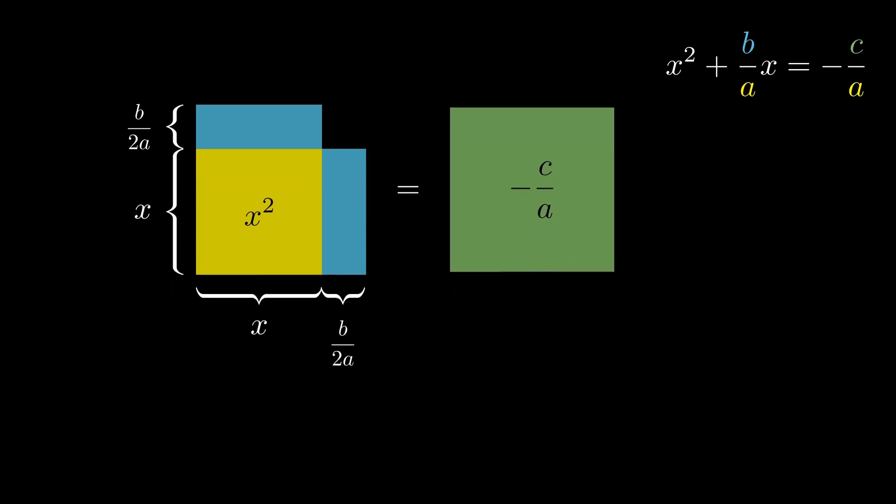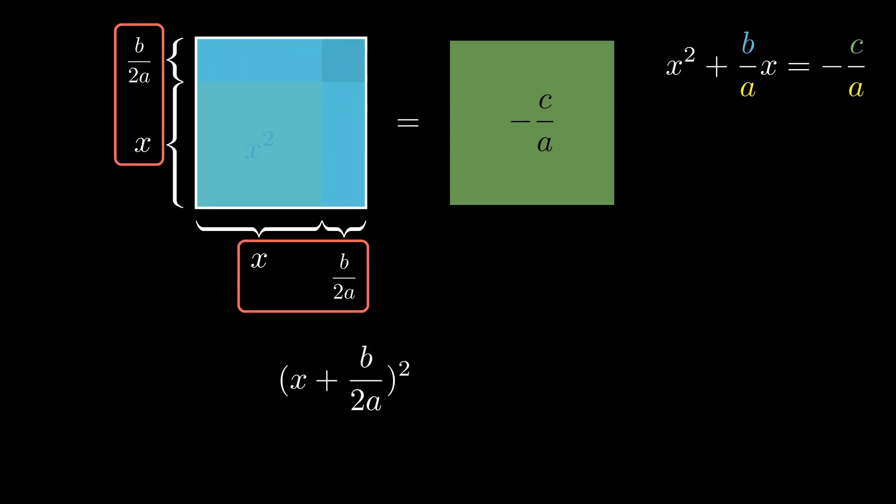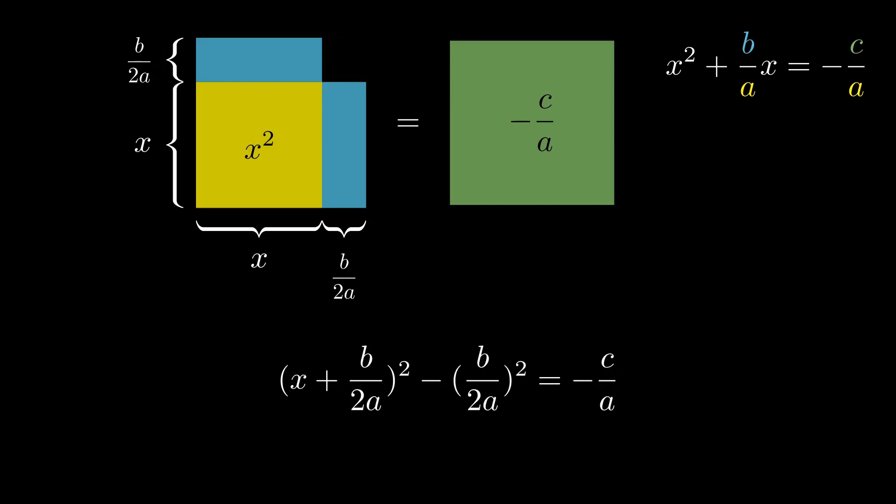The area of the shape on the left side is equal to the area of the square on the right side. Everything is just rearranged. We can now calculate the area of the shape on the left side by first completing a square by multiplying the sides with each other. This will give us x plus b over 2a squared. Then we can subtract the empty spot on the top right corner by subtracting b over 2a squared. And then set everything equal to negative c over a.